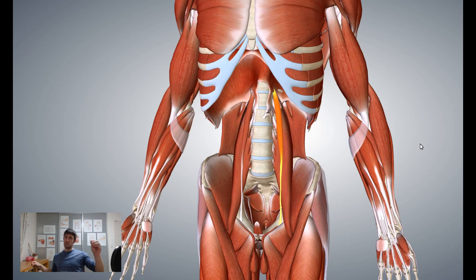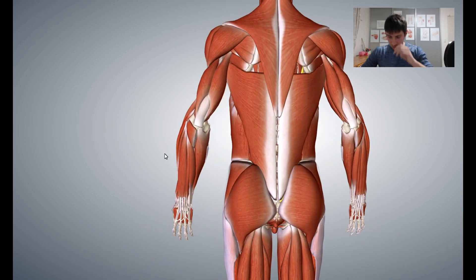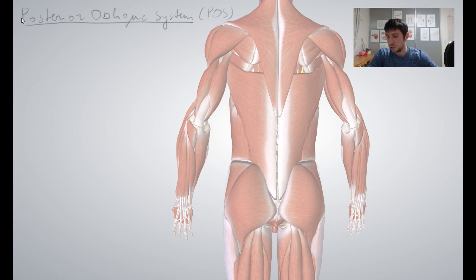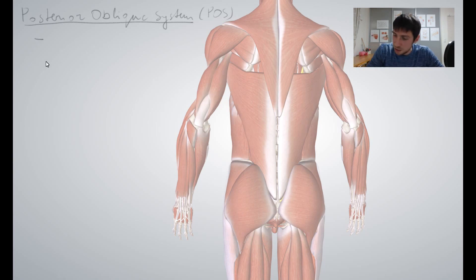The posterior oblique system, or POS, consists of latissimus dorsi, tensor fascia latae, and contralateral gluteus maximus. It runs as a diagonal line from one side's shoulder towards the other side's hip — like latissimus dorsi on the left side going towards the right hip.